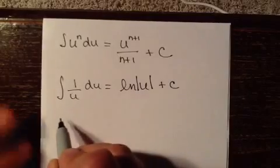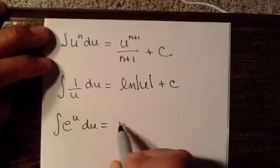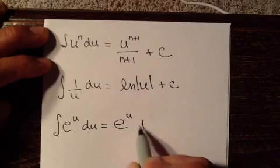And the third integration that we see often is e to the u du integration, where that's just going to be e to the u plus c.